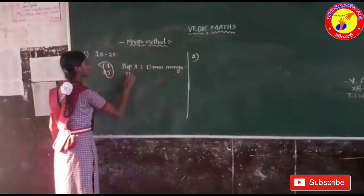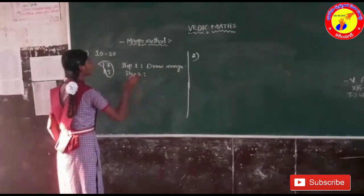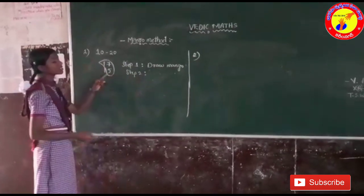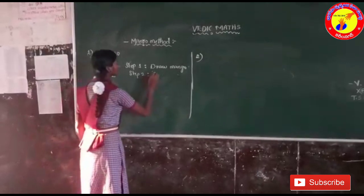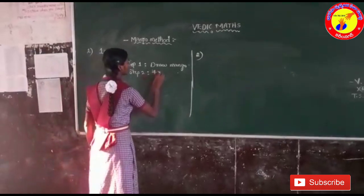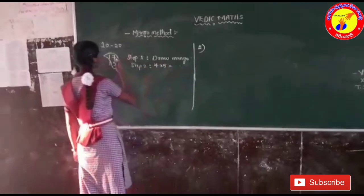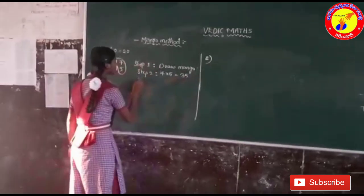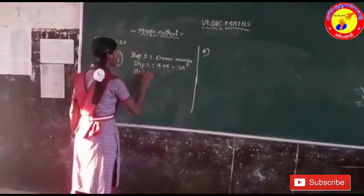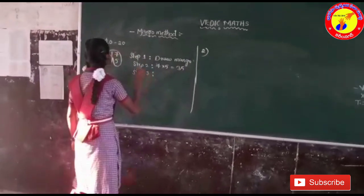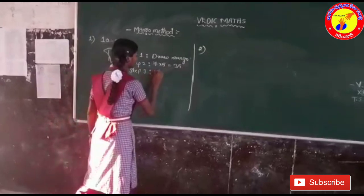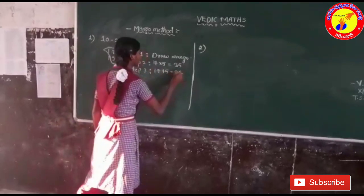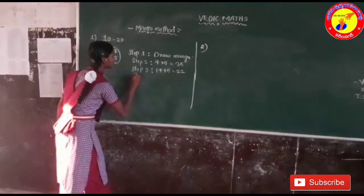Step 2: we have to multiply 7 into 5, which are in the ones place. 7 into 5 is equal to 35. In step 3, we have to add 17 plus 5. 17 plus 5 is equal to 22.